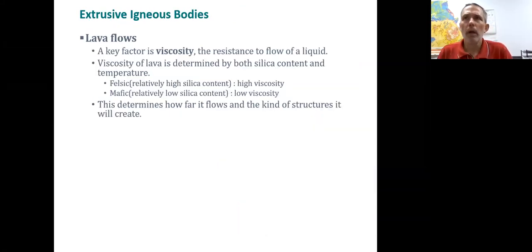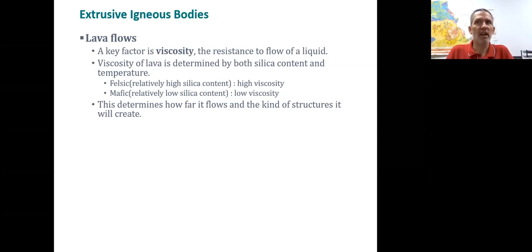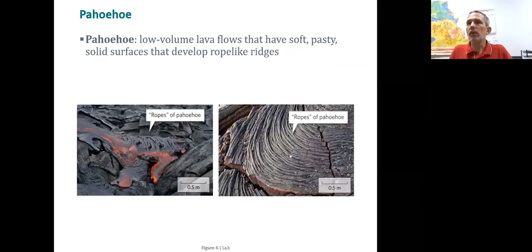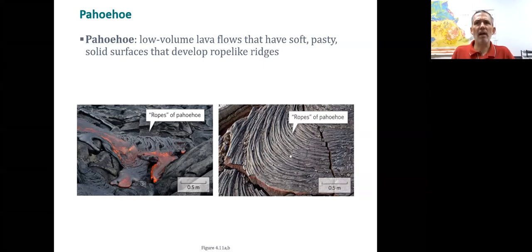Extrusive rocks and lava flows are going to be defined by viscosity — resistance to flow. Things with low viscosity are really runny. One factor that can influence viscosity is silica content: something felsic is going to be very sticky, while something mafic is going to have lower viscosity. Other factors include temperature and gas content. Looking at this lava flow, it's very similar to the Hawaii lava that flows like a river.